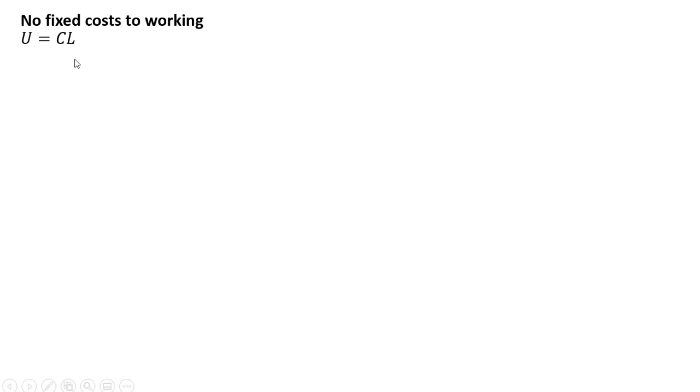Here is the person's utility function. It's a function of C, dollars of consumption. Utility is also a function of L, hours of leisure. We're going to define h as hours of work.